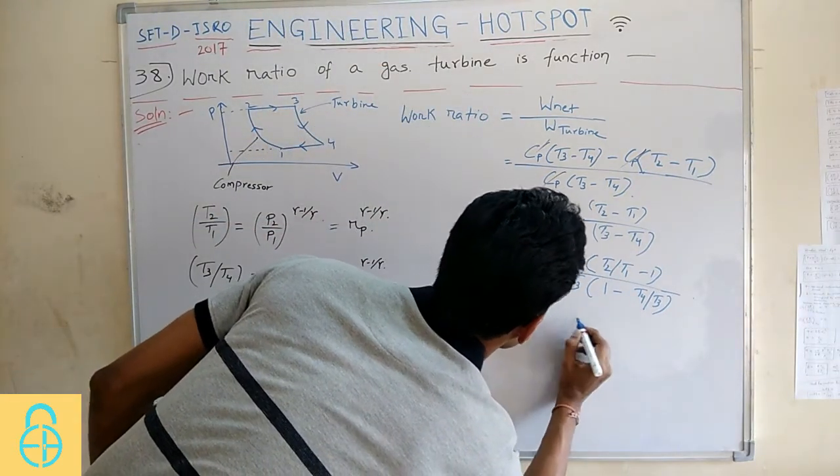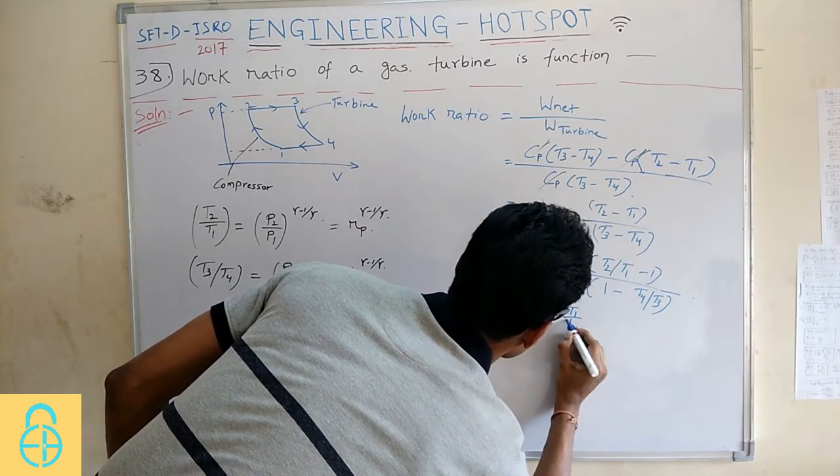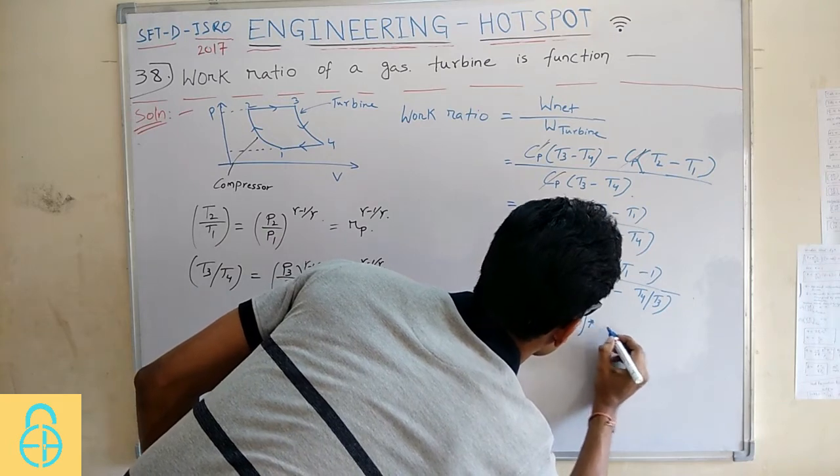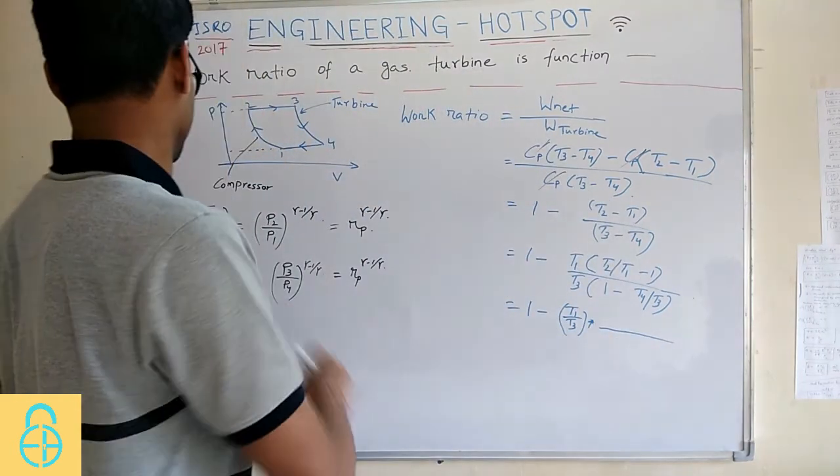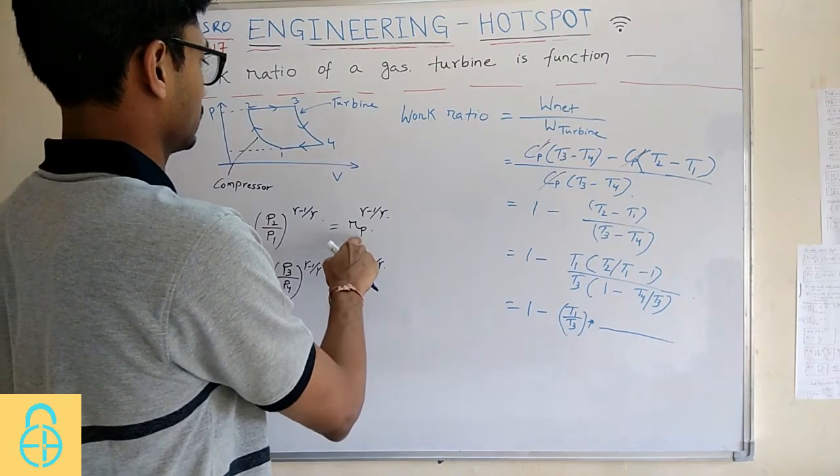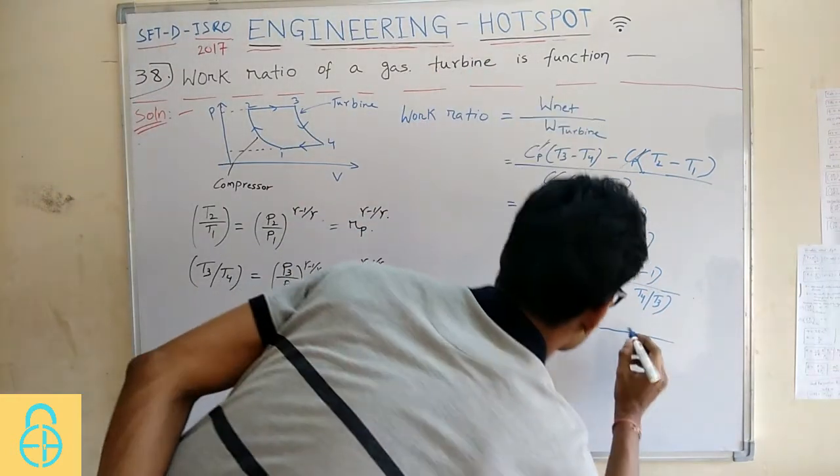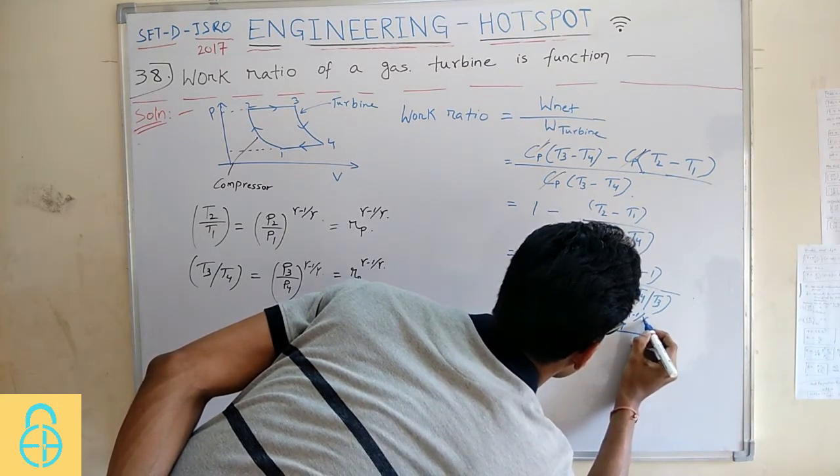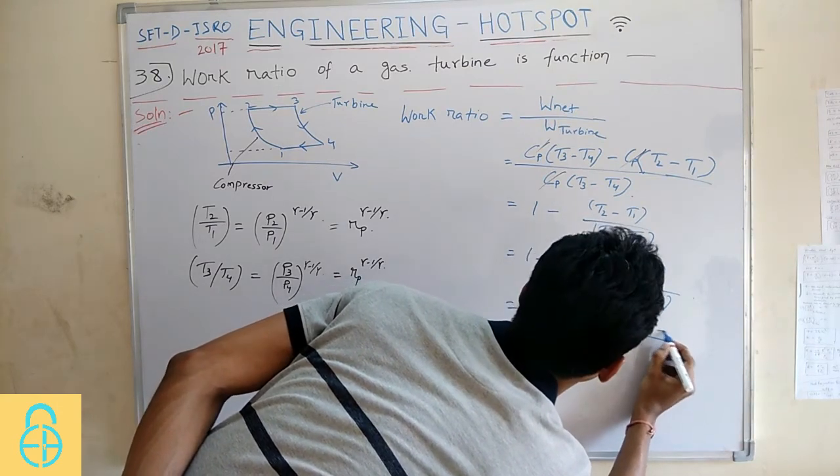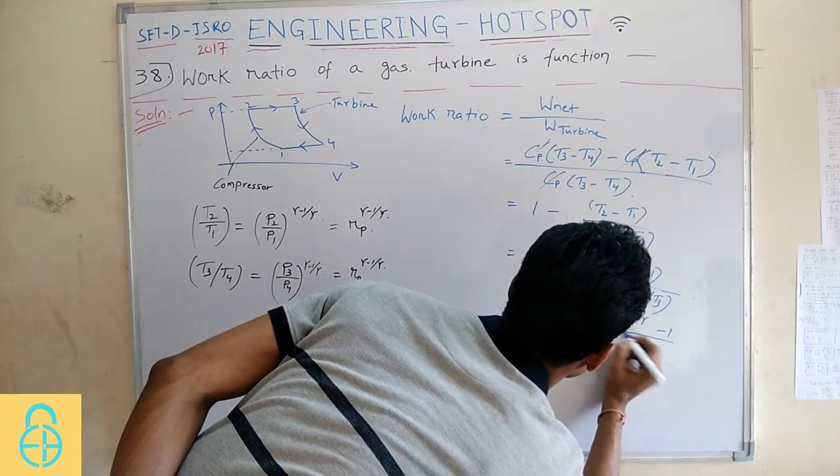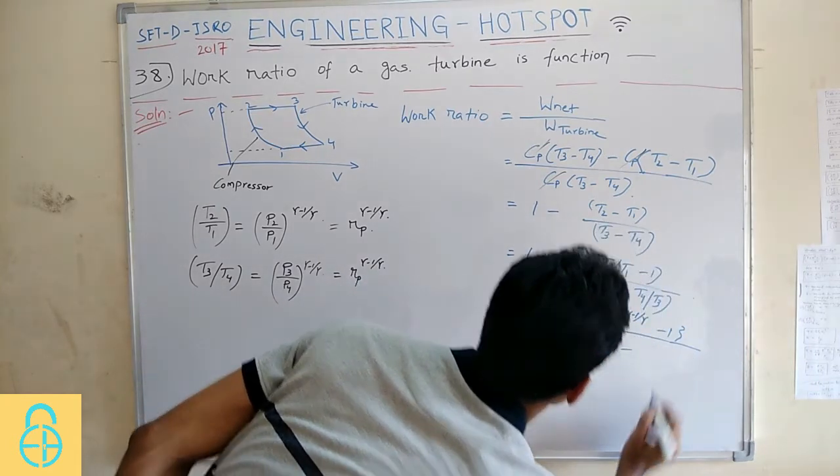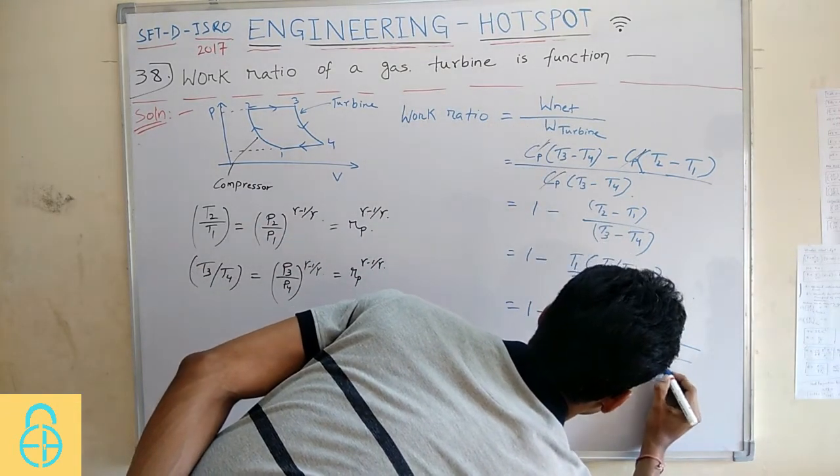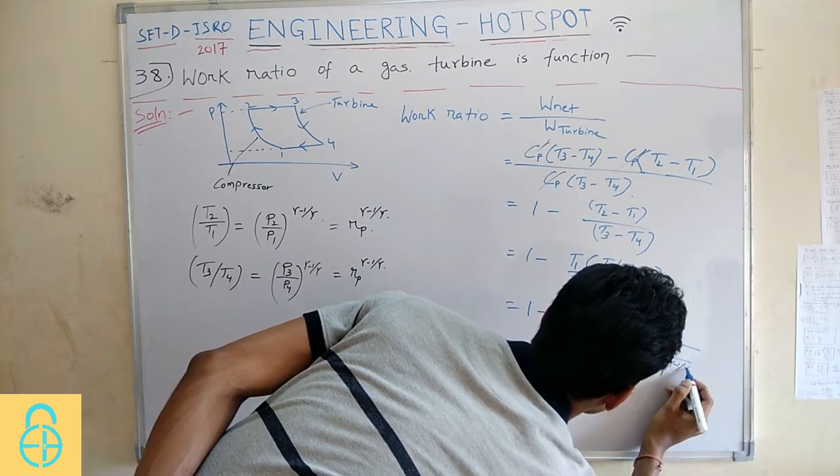Now, substitute this value. T2 by T1 you can replace with this part. This will be Rp to the power gamma minus 1 by gamma minus 1 and this will be 1 minus 1 upon Rp to the power gamma minus 1 by gamma.